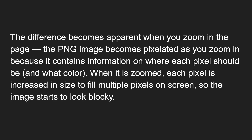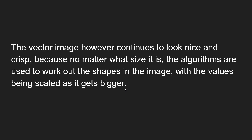When you take a PNG file and try to zoom in, it gets pixelated. The PNG image becomes pixelated as you zoom in because it contains information on where each and every pixel should be. When zoomed, each pixel increases in size to fill multiple pixels on screen, so the image starts to look blocky. The vector image, however, continues to look nice and crisp because no matter what size it is, the algorithms work out the shapes in the image with values being scaled.